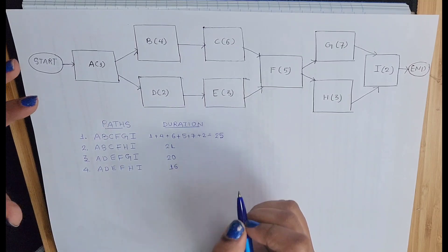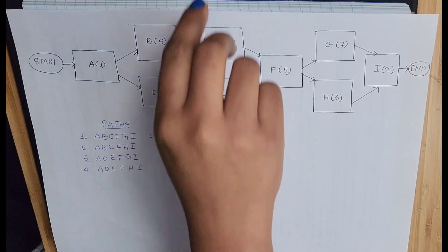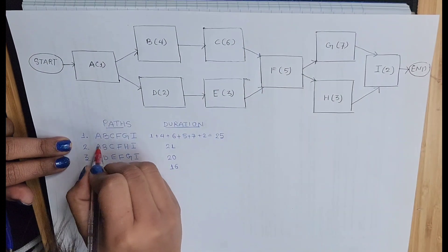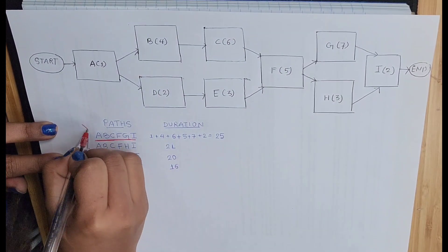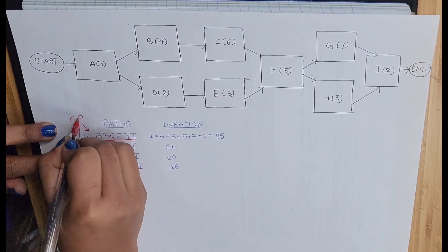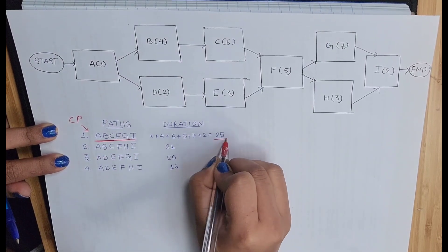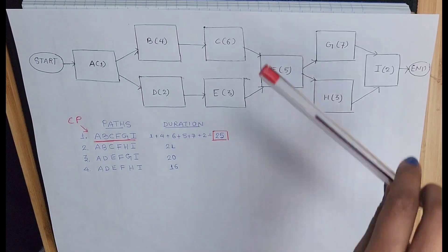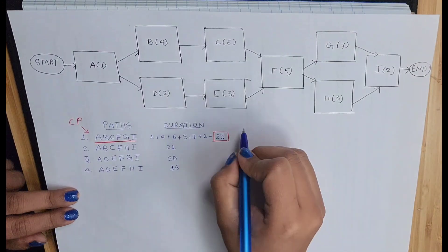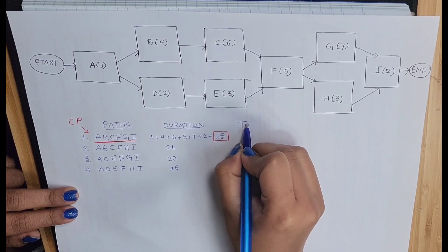Now you know that the longest duration is our critical path. So now you know that A-B-C-F-G-I is your critical path because it has the longest duration as 25.